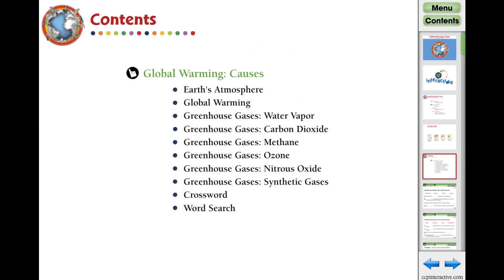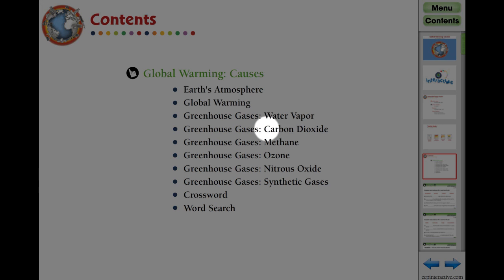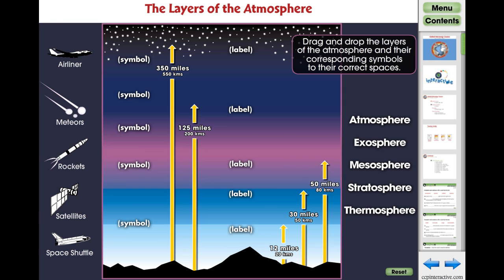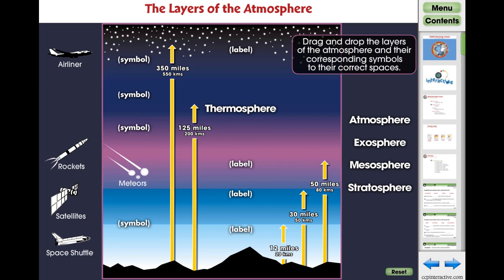Our 80-screen interactive lesson features comprehensive interactive activities covering topics such as Earth's atmosphere, carbon dioxide, and ozone. The majority of the eight chapters feature their own interactive activity directly related to the reading passage.